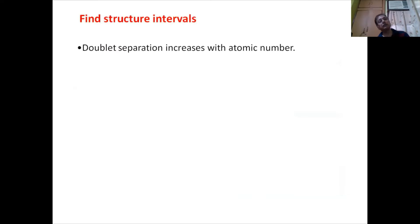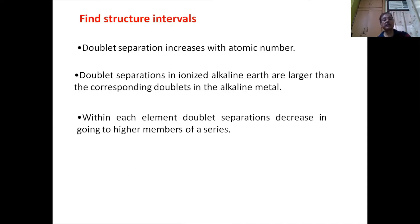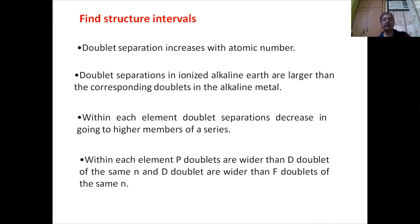Based on experiment, there are certain observations about fine structure intervals. Doublet separation increases with atomic number. Doublet separations in ionized alkaline earth are larger than the corresponding doublets in alkali metals. Within each element, doublet separations decrease going to higher members of a series, and P doublets are wider than D doublets of the same N, and D doublets are wider than F doublets of the same N.